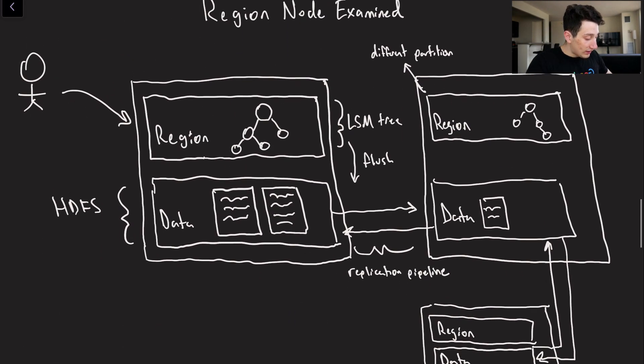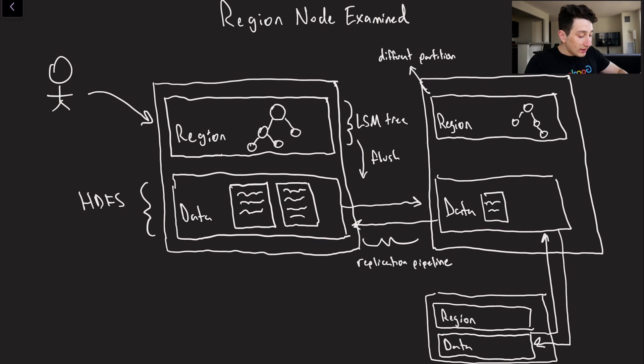So when we examine our region node, what's actually happening? Well basically the region node is what is operating our LSM tree index. So let's again discuss this. We've got a client, and to recall the client is going to be writing to the region node.